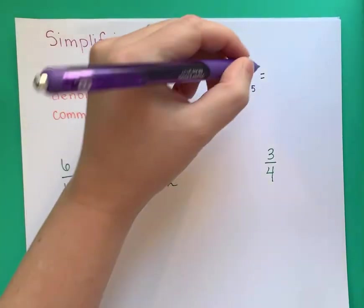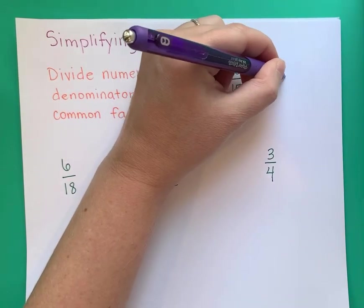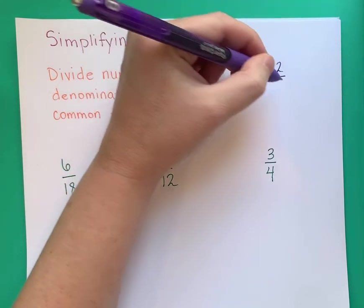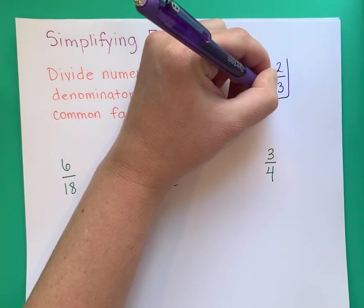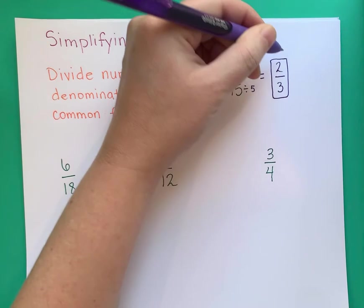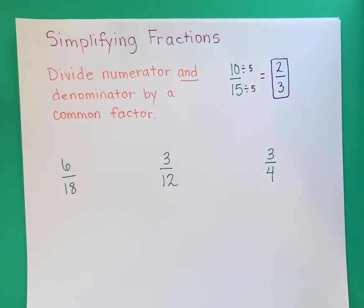10 divided by 5 gives me 2, and 15 divided by 5 gives me 3. So 10 over 15 is the same thing as 2 thirds. A real-life example would be if you had a pizza cut into 15 slices — if you ate 10 of the slices, you really ate 2 thirds of that pizza, and there would be 1 third left over.